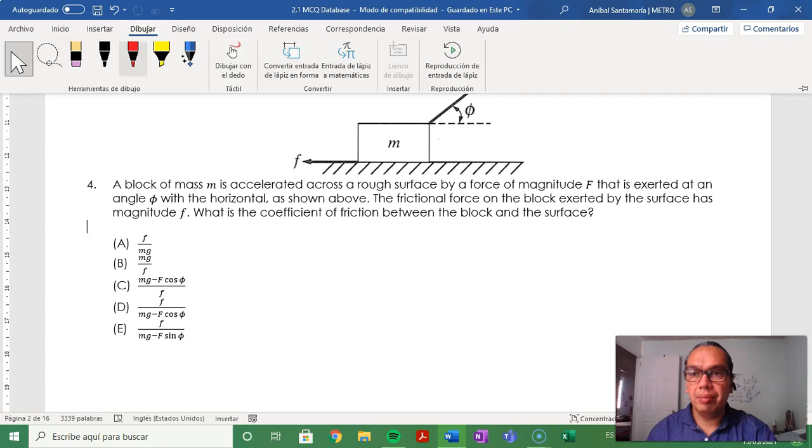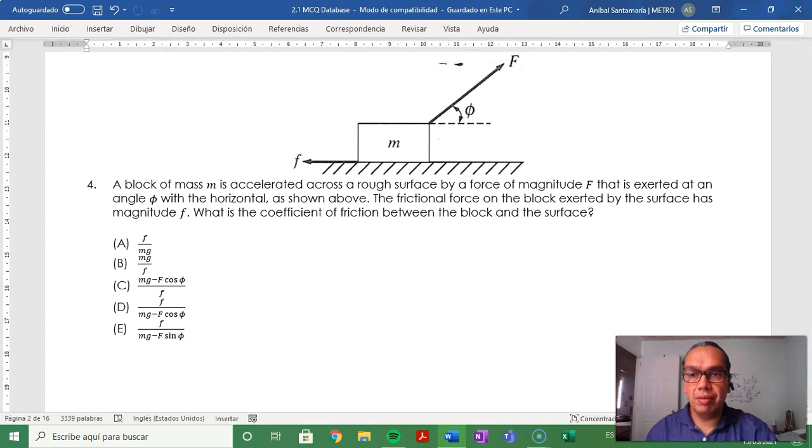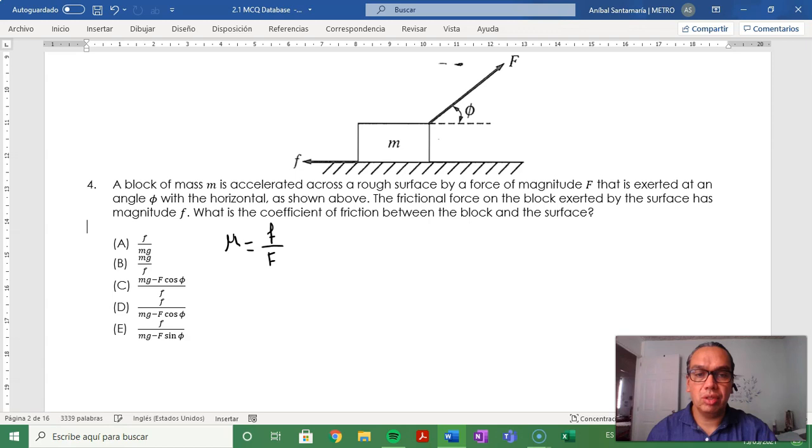Well, the first thing to consider here is that your coefficient of friction, mu, should be equal to the ratio of friction force f to the value of the normal force fn.